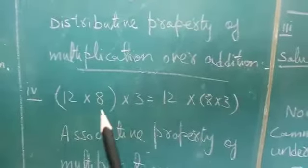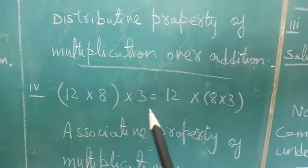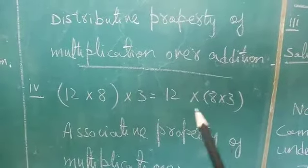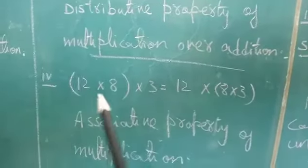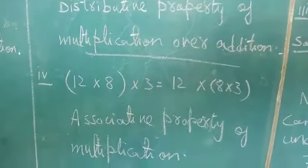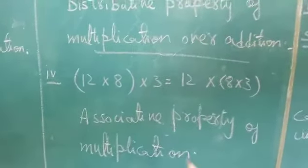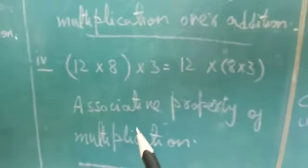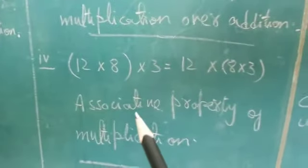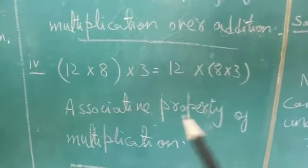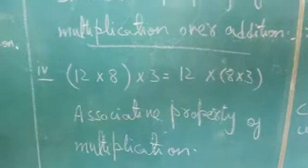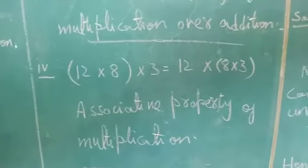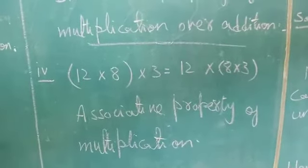Number 4: 12 into (8 into 3) is equal to (12 into 8) into 3. These also have left hand side and right hand side. There are three digits involved, so this is the associative property of multiplication.